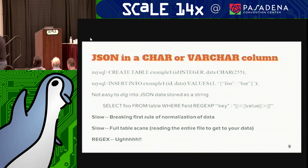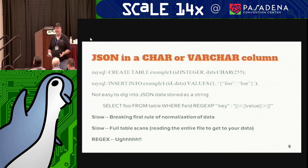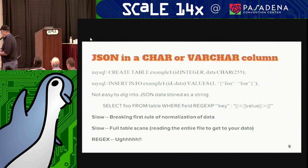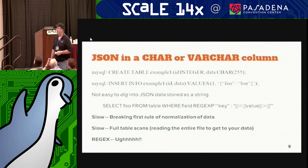The other problem is you're breaking the first rule of data normalization, which is what relational databases are built on — you cut up the data into the smallest usable bits, like zip codes, states, street addresses, first name, last name. With JSON, one of the problems is you're shoving everything into one bucket. Going through that bucket gets kind of nasty. Also it's slow — it's going to do a full table scan, meaning you have to read everything in the book from first page to last. Slow, inefficient, nasty.